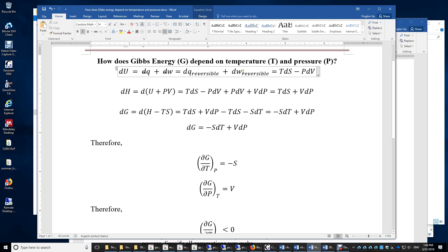dW equals negative P external dV. So it's negative external pressure times dV. In a reversible process, P external equals P. Therefore, dW reversible equals negative P dV. H is equal to U plus PV.